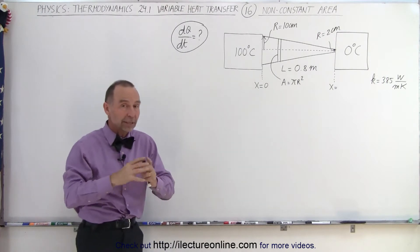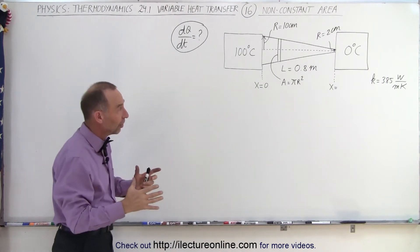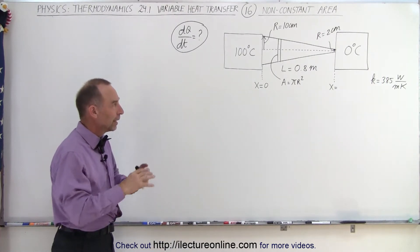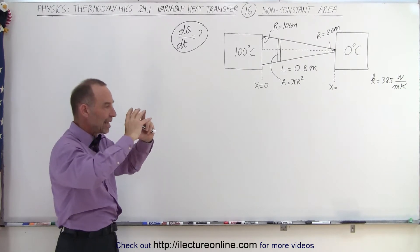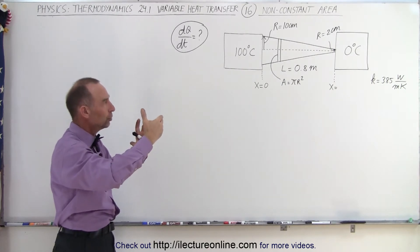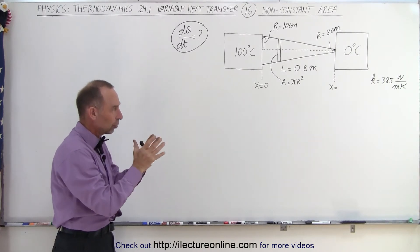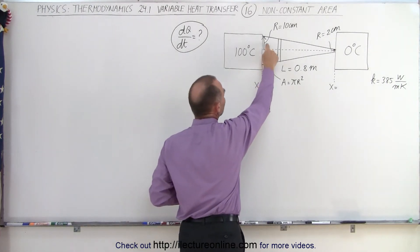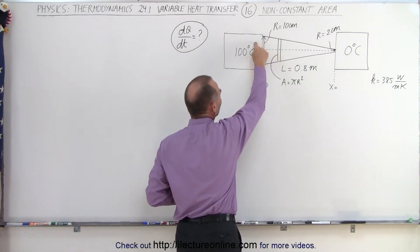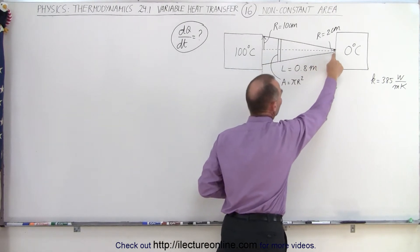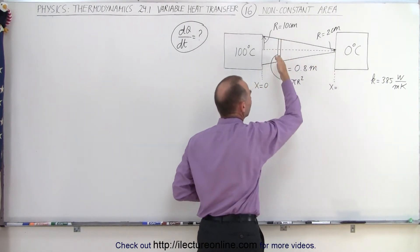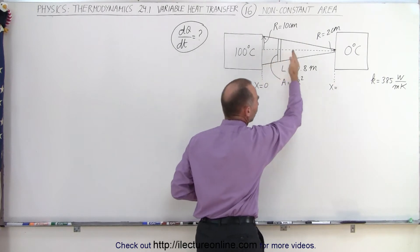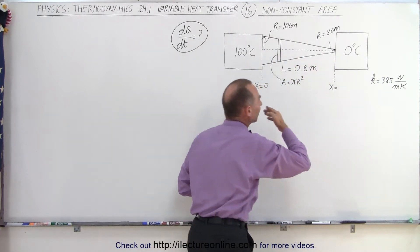We know that dQ/dt will be a constant, but what will it be and how do we figure that out? The conducting pad is basically a truncated circular cone. It starts out with a radius of 10 centimeters on the left side and a radius of 2 centimeters on the right side. The cross-sectional area is going to be πr², with r varying from left to right.